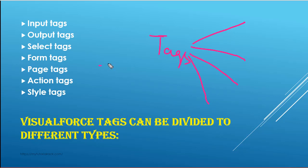There are seven important categories that we have: input tags, output tags, select tags, form tags, page tags, action tags, and style tags. So these are the seven most important categories of different tags that are available.